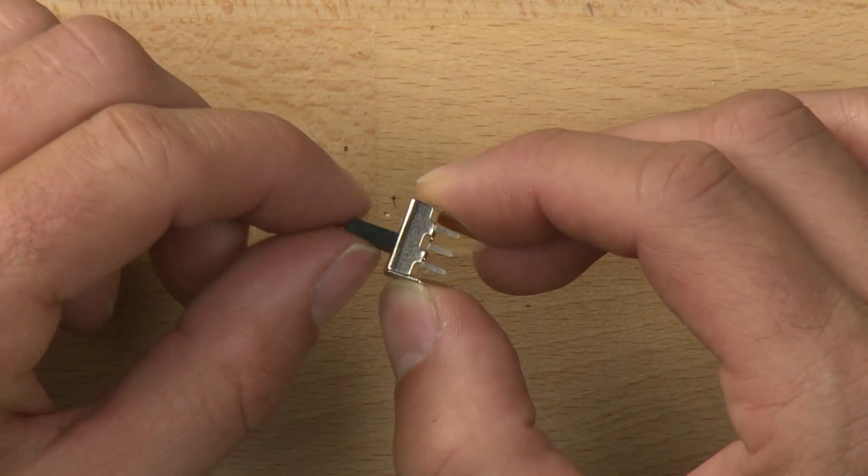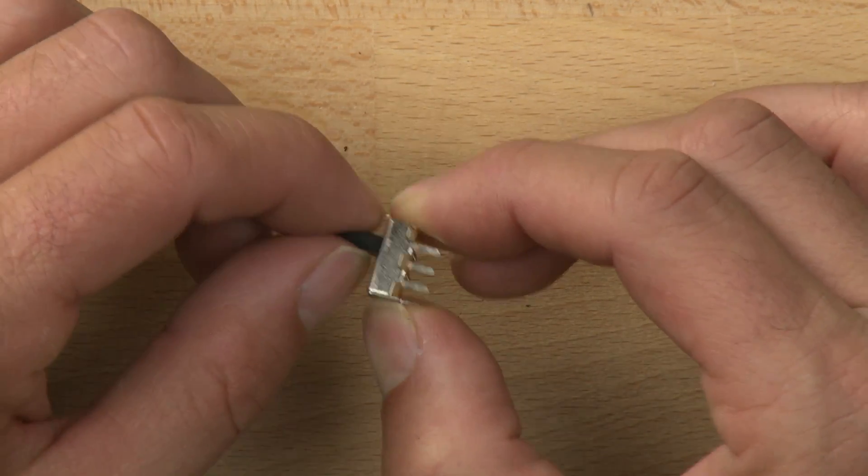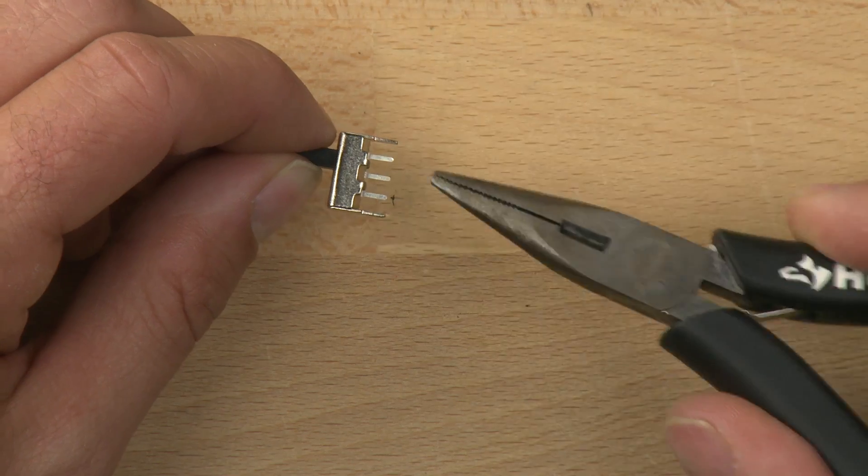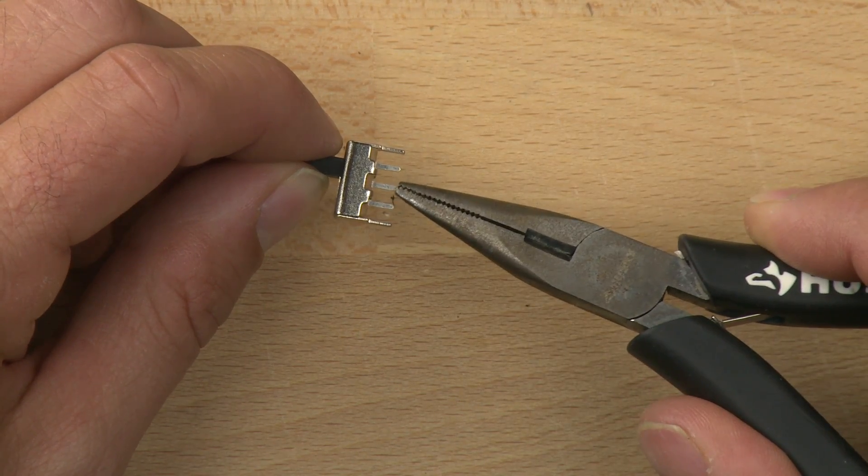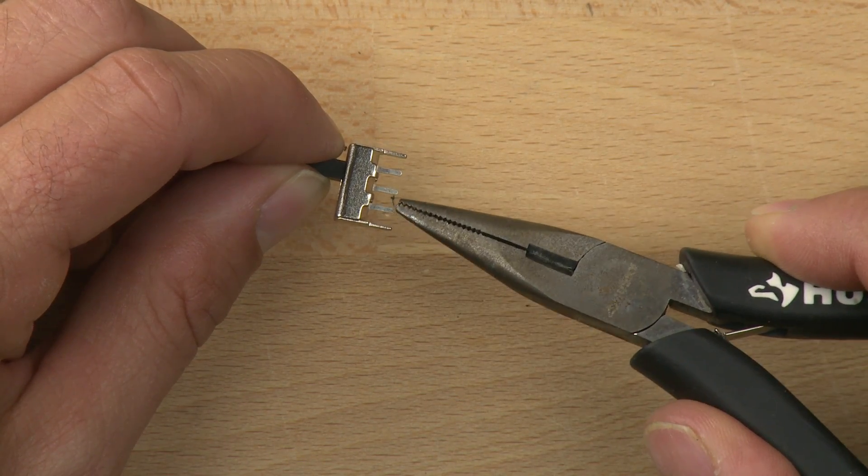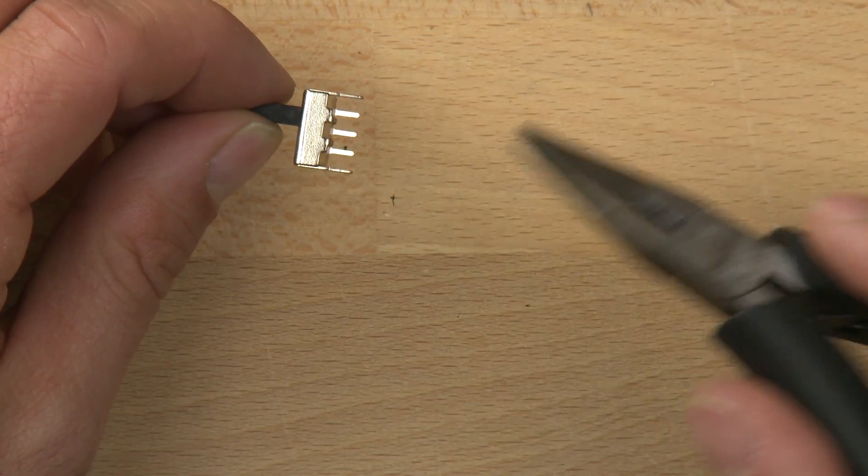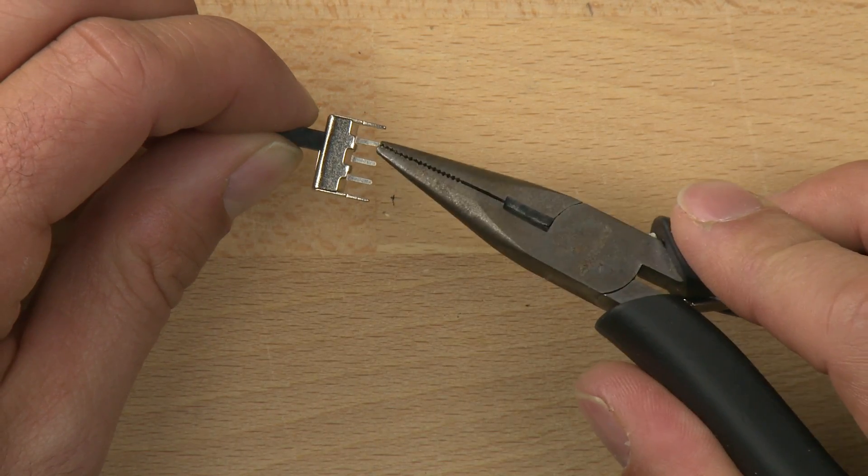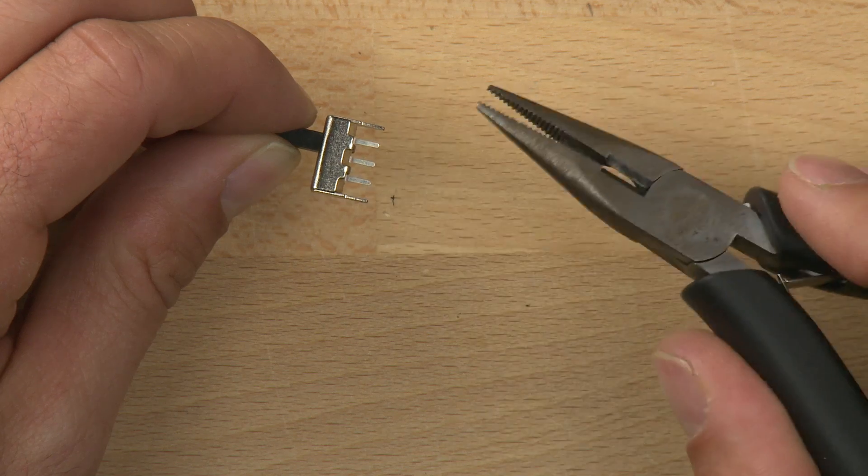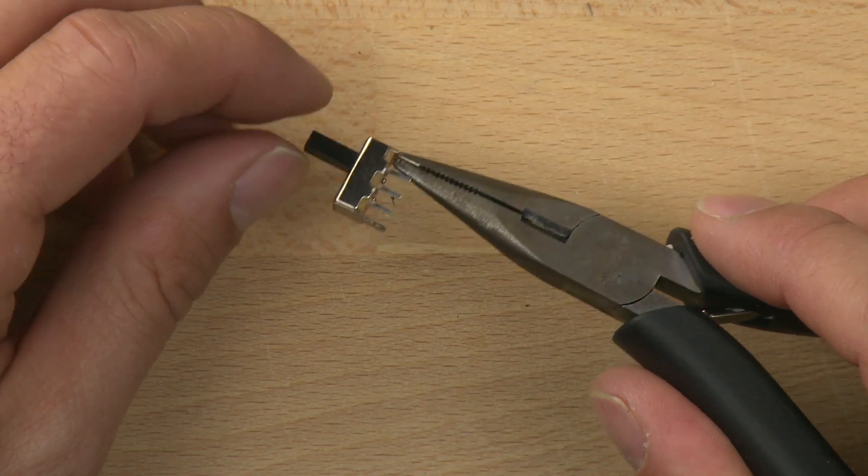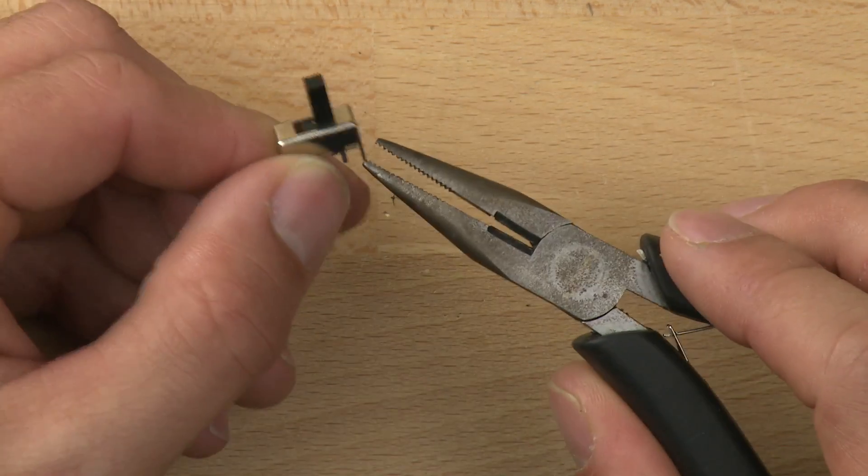It's got a plastic slider here which goes back and forth, and it connects the power between this contact and this contact or between this contact and this contact. This is called a single-pole double-throw because there's one pole in the center and there's two throws on either side. So let's go ahead and take it apart and see what it's made out of and how it's made.